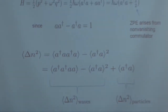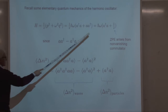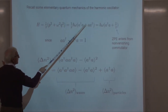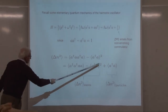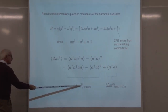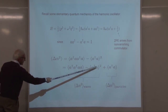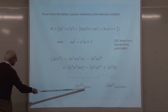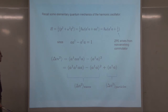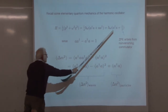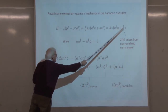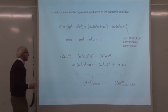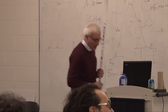Zero-point energy in the quantum harmonic oscillator arises from the non-vanishing commutator between a and a-dagger. The variance in photon number has a wave term — which goes to zero for a coherent state (eigenstate of a) — and a particle term equal to the average photon number, giving Poisson statistics for coherent light. Einstein inferred the particle term without ever computing a commutator.